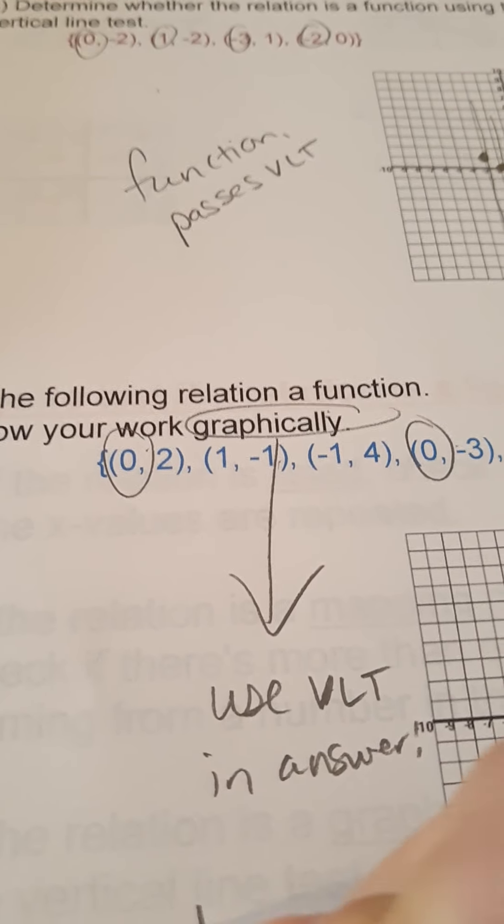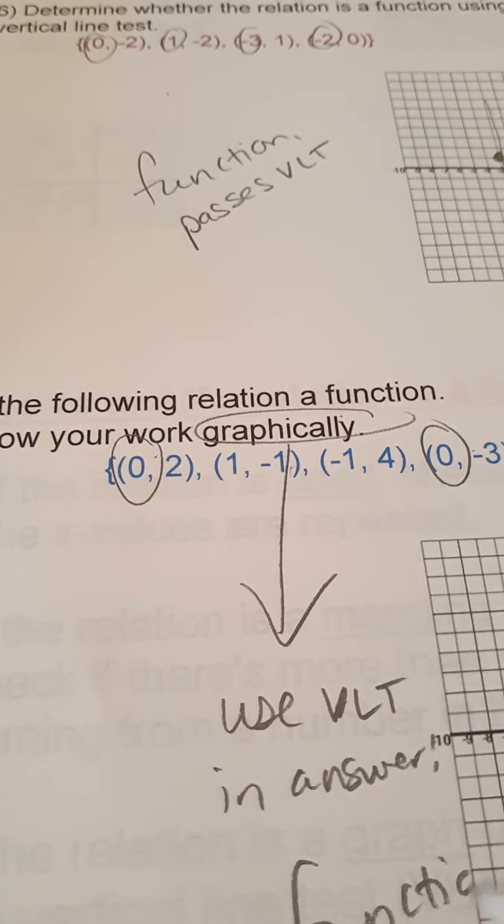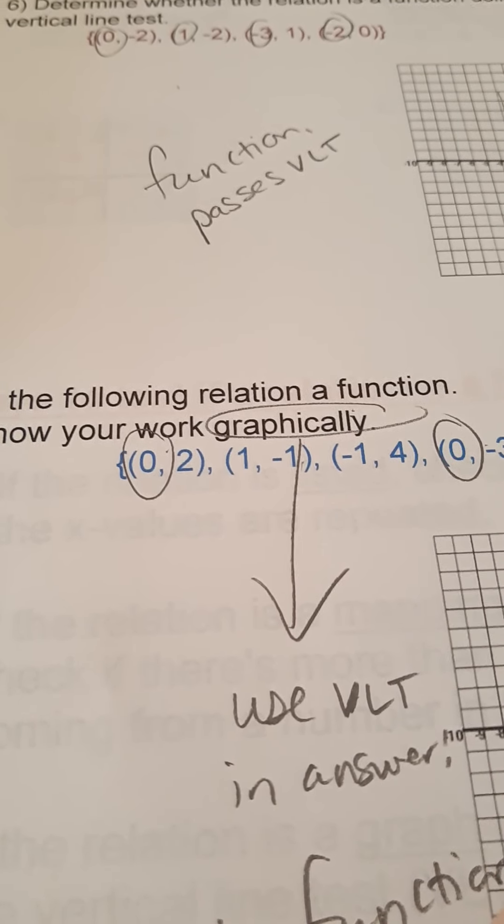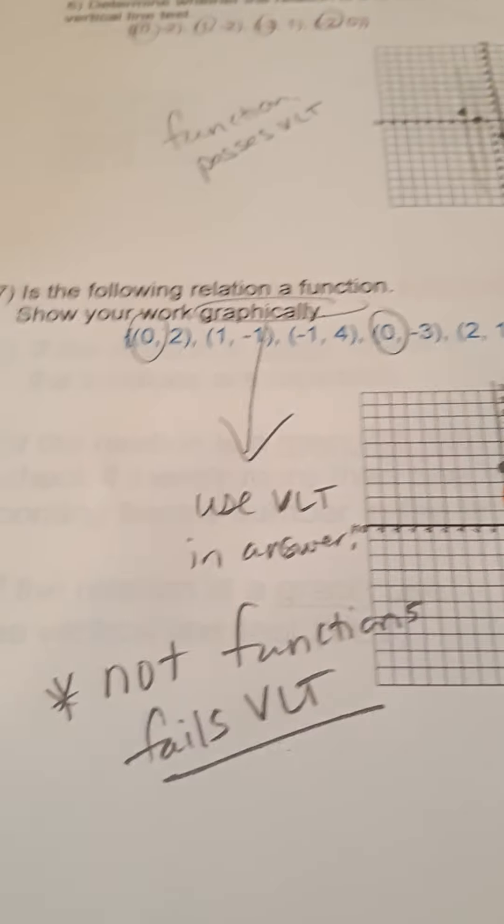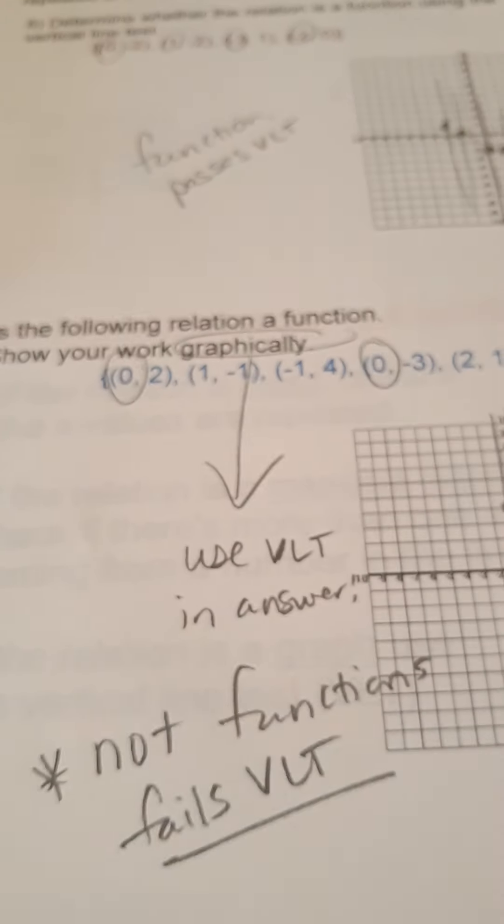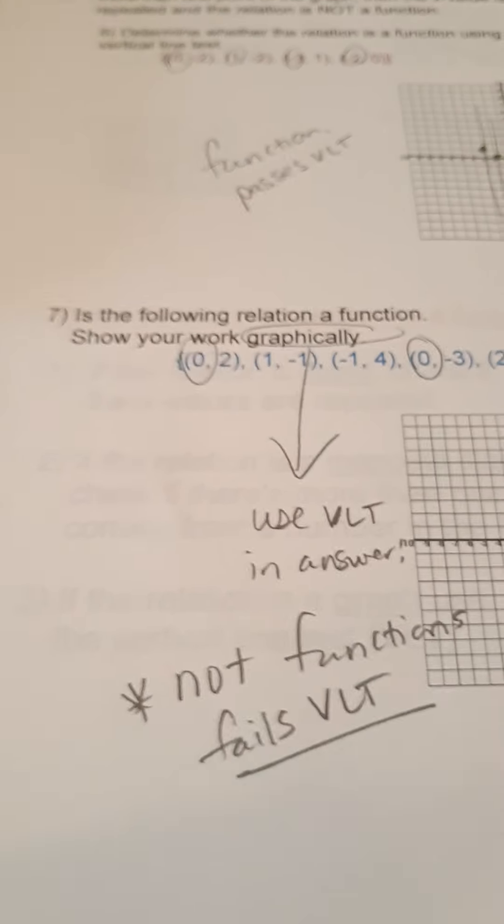So, you would say not a function fails the VLT. And yes, it's okay to say VLT. It is universally accepted in math that the vertical line test is abbreviated to VLT. Now, who's Hungarian who wants a BLT? Happens every time.